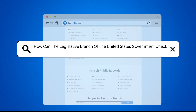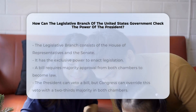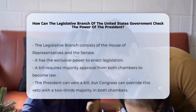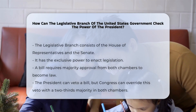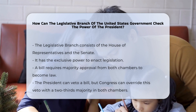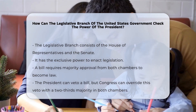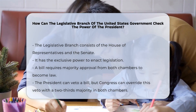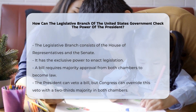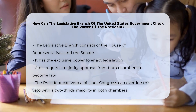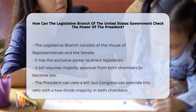How can the legislative branch of the United States government check the power of the president? The legislative branch, composed of the House of Representatives and the Senate, has several mechanisms to check the power of the president, ensuring a balance of power within the U.S. government.